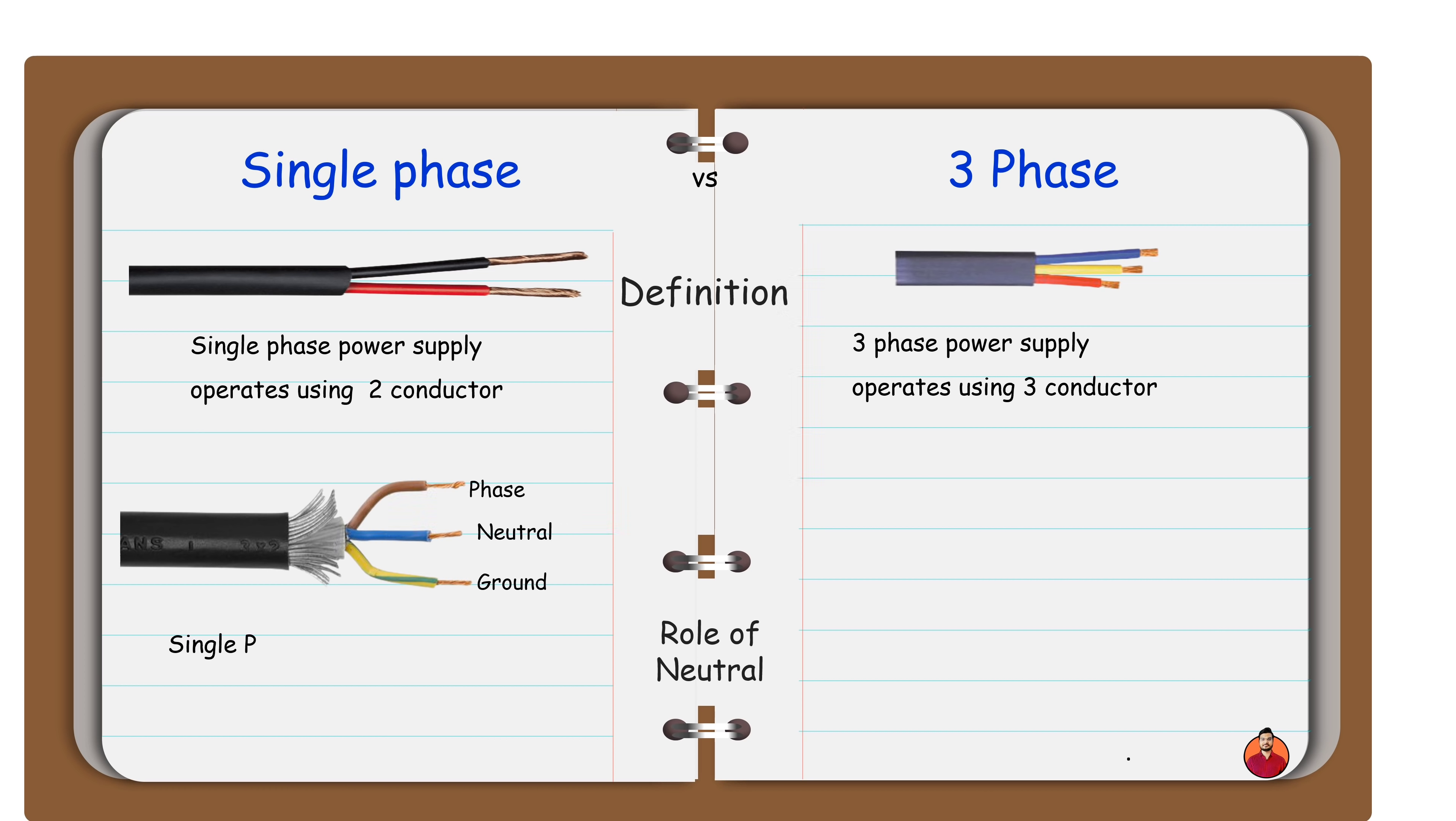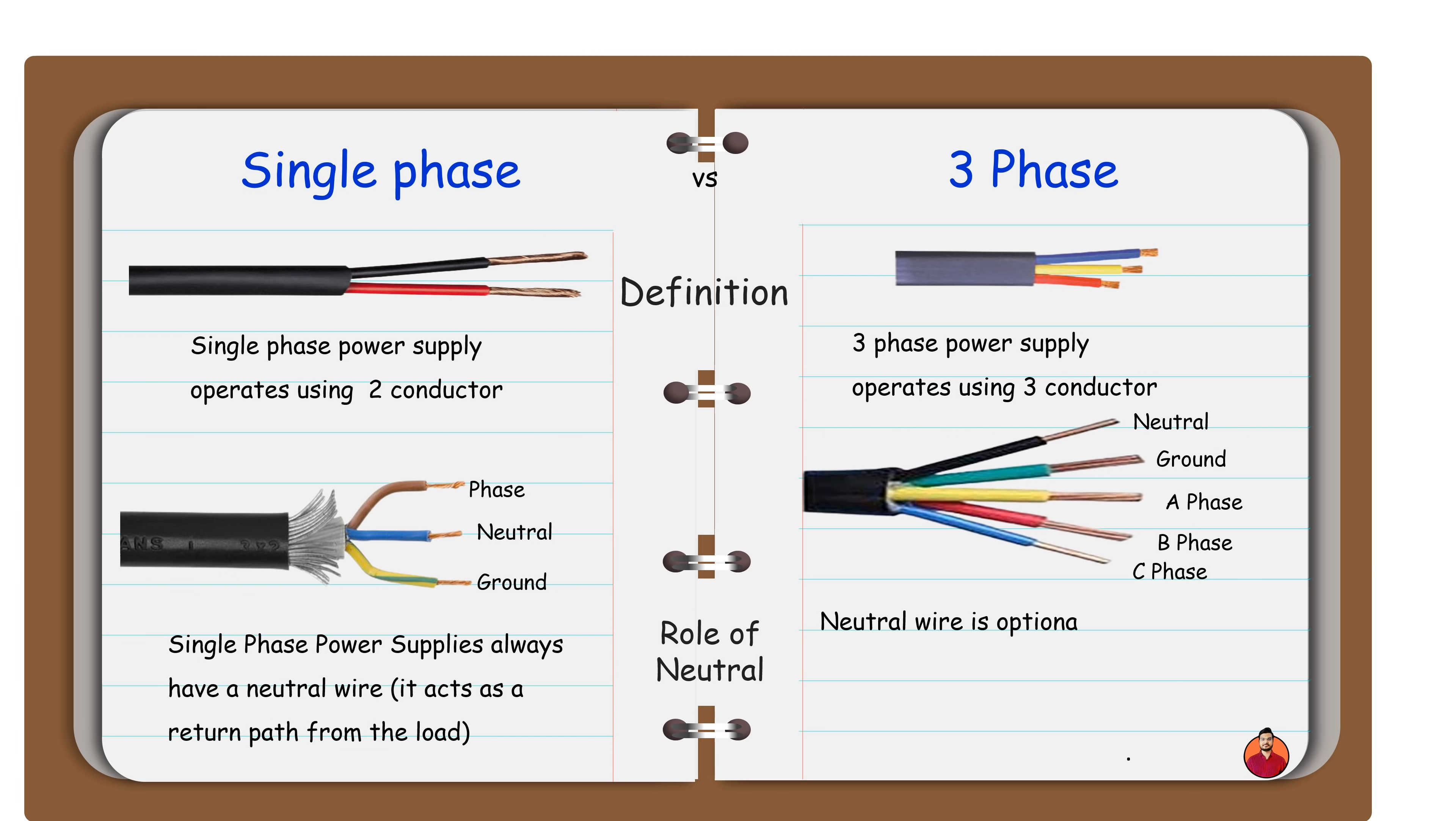Single-phase power supplies always have a neutral wire. It acts as a return path from the load. A neutral wire is optional in three-phase power supplies. Delta connections have no neutral wire, but star connections may or may not have neutral wire.